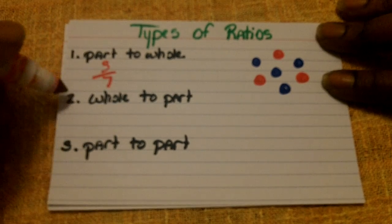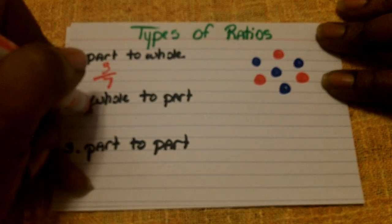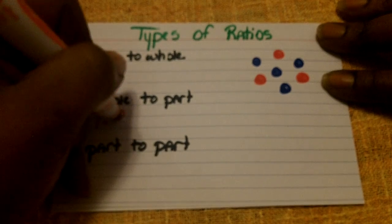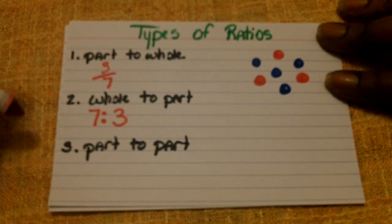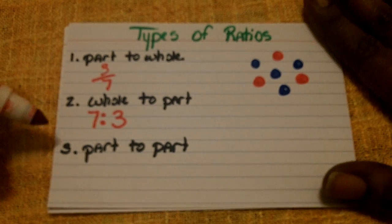Next, we have whole to part. In order to compare whole to part, whole to part, and again we're focusing on the red circles, would be one way of writing this ratio.